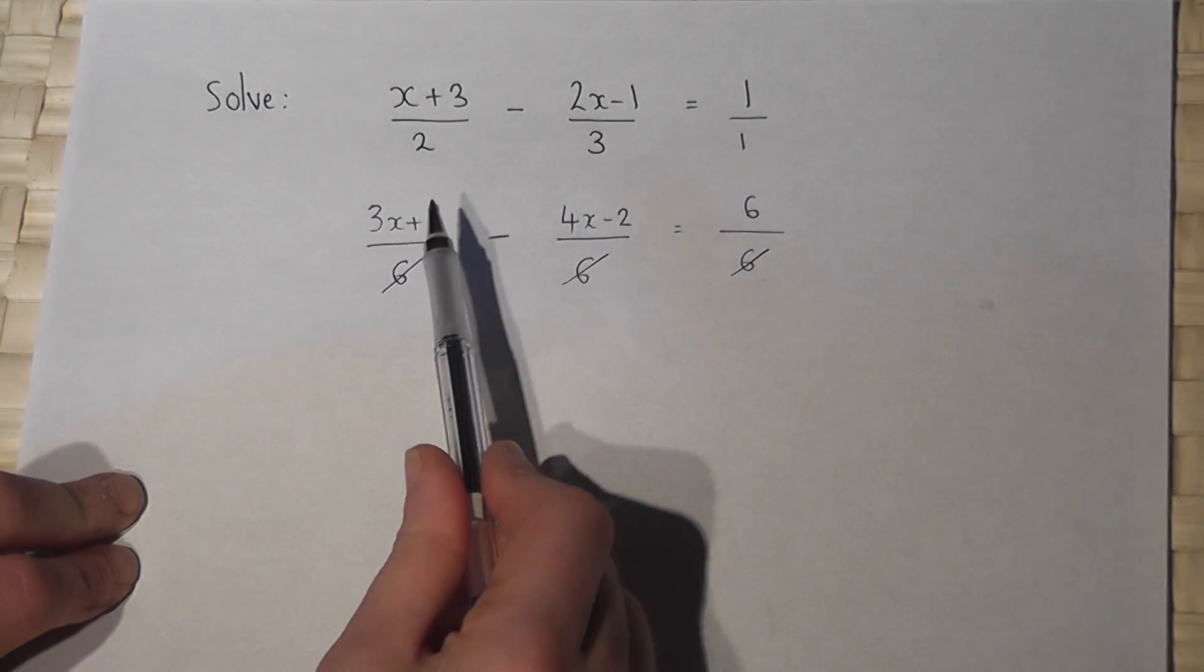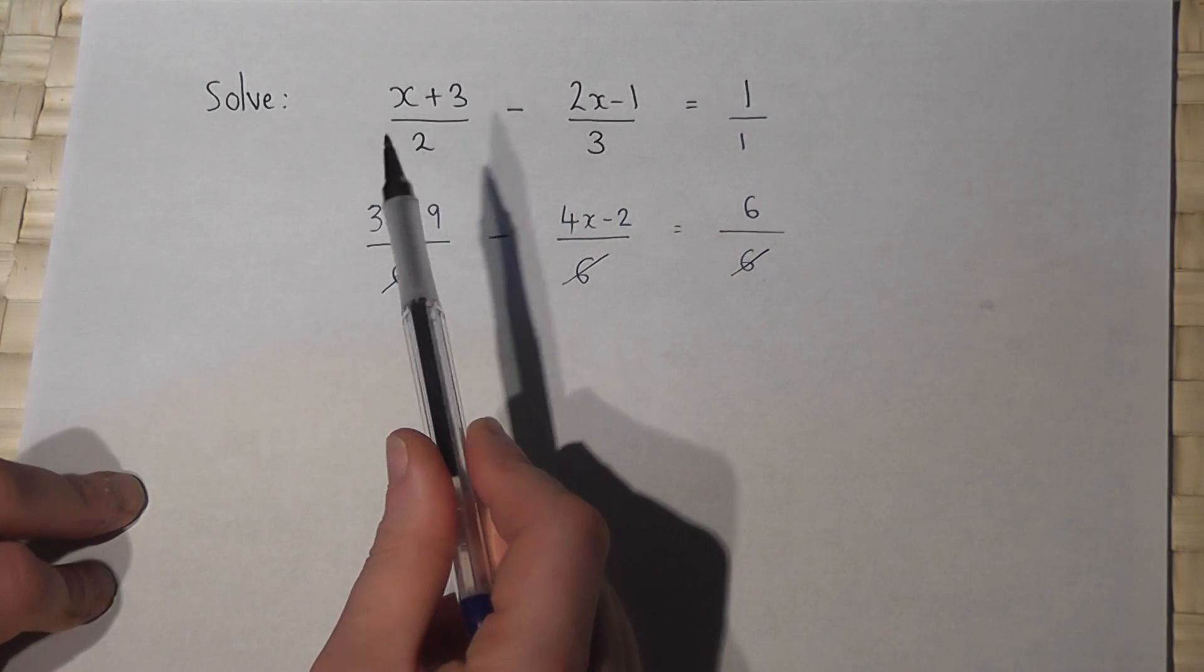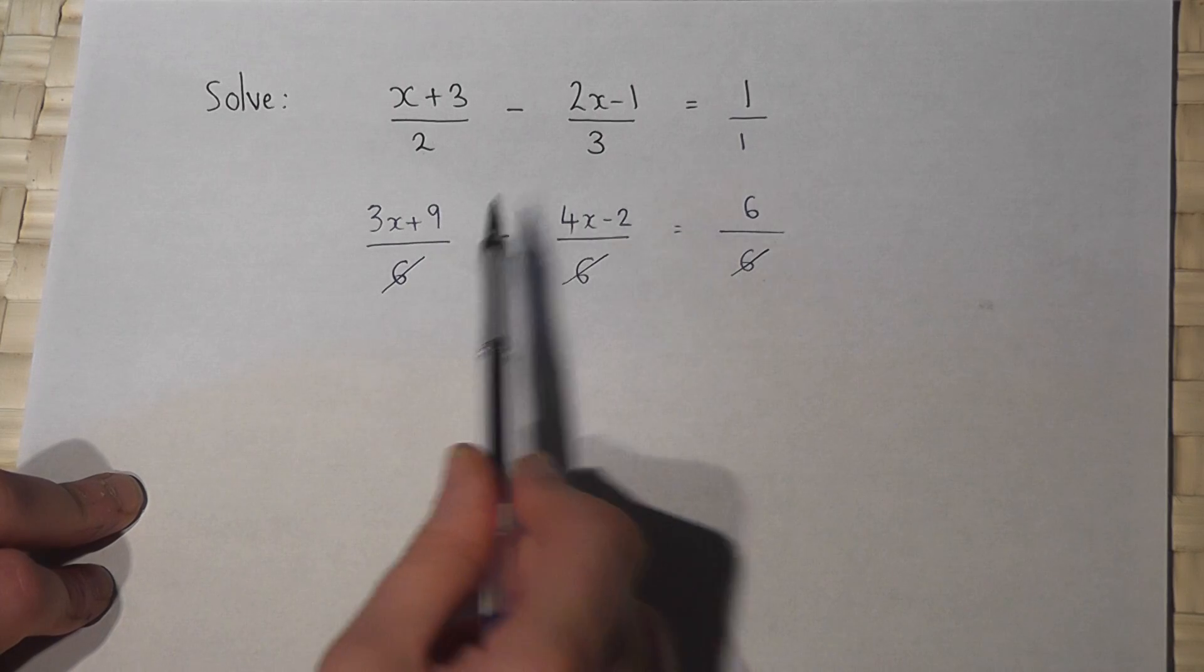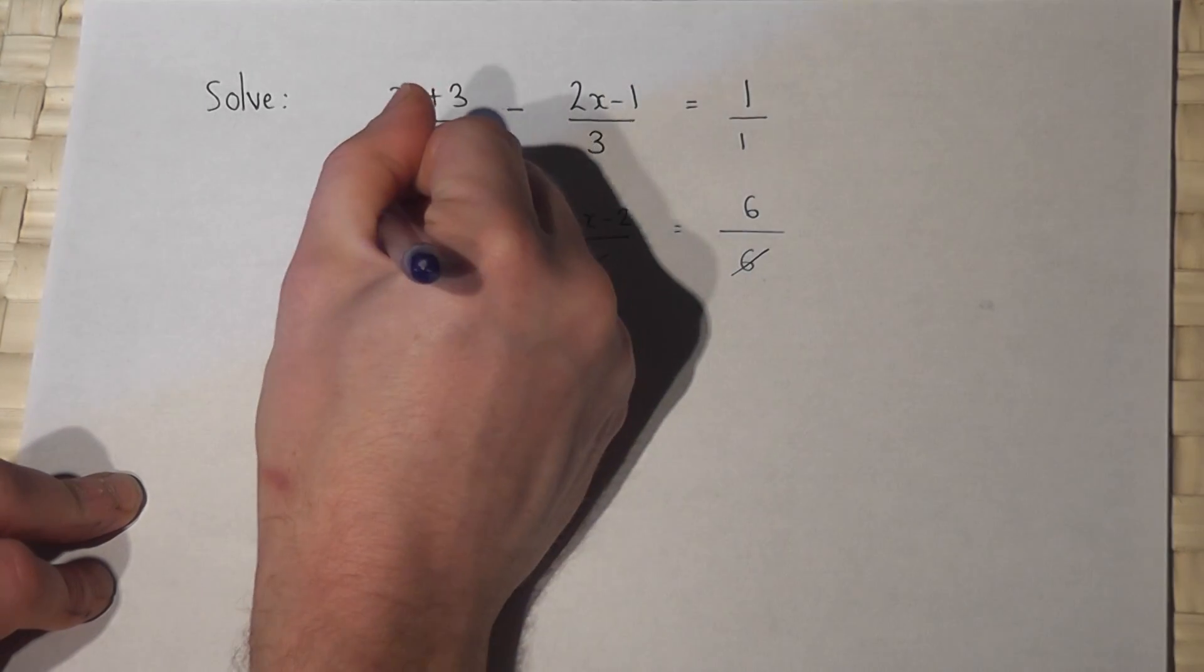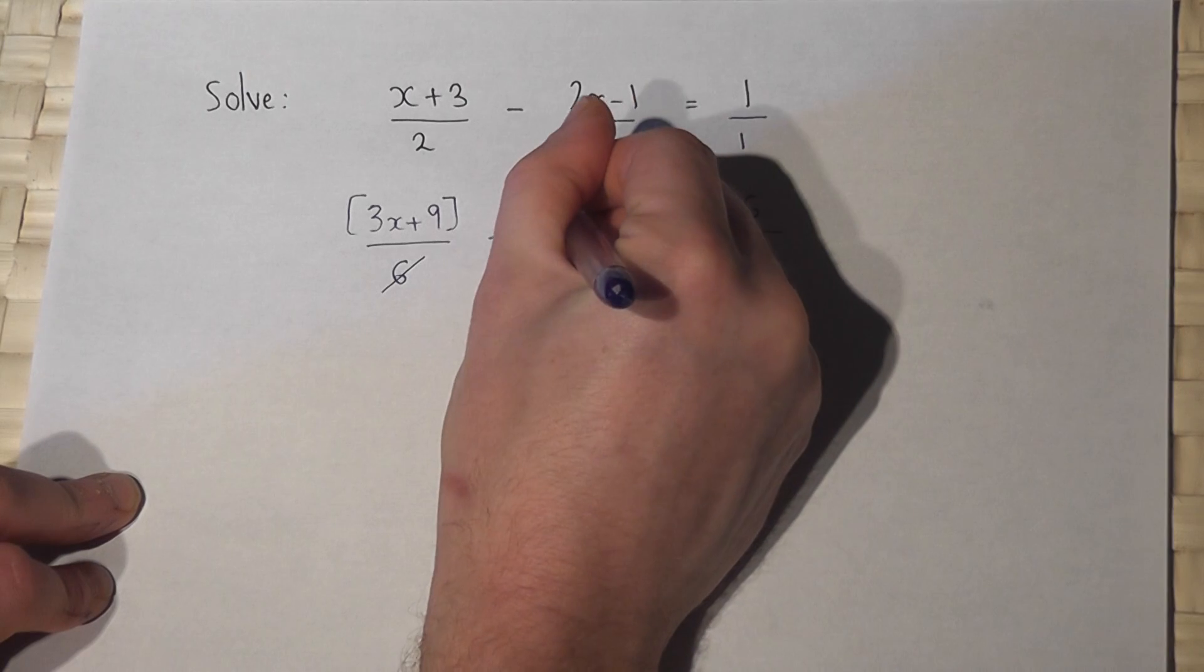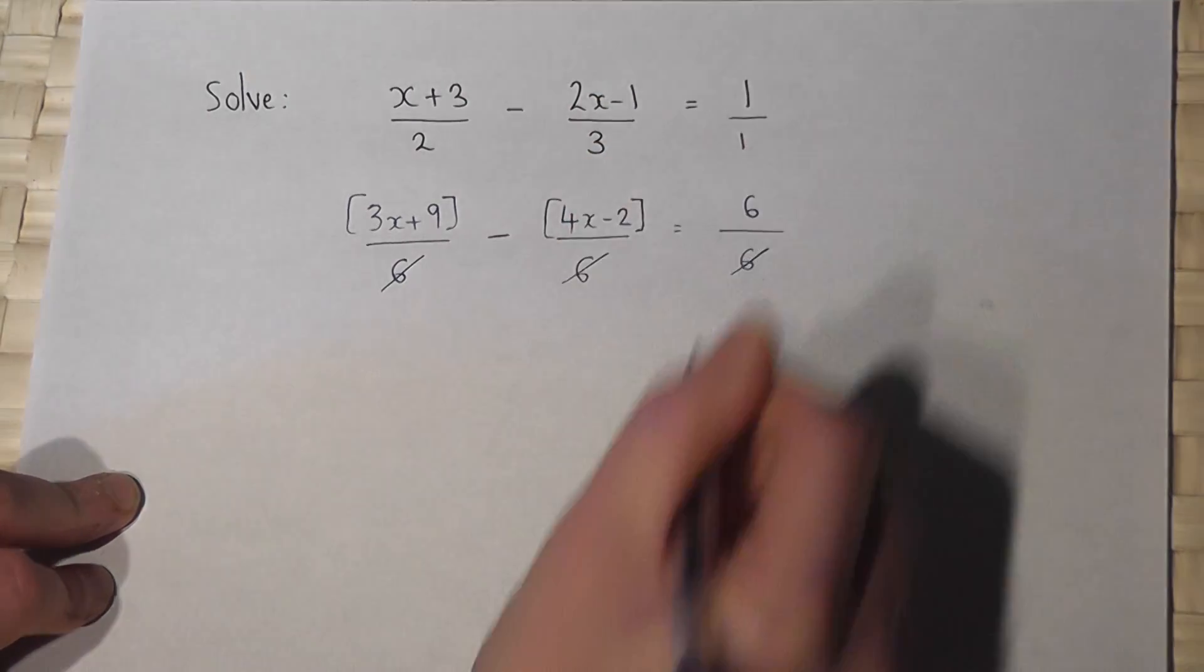However, when I simplify this, I must be really, really careful. Because I've got a three x plus nine, take away a four x minus a two.